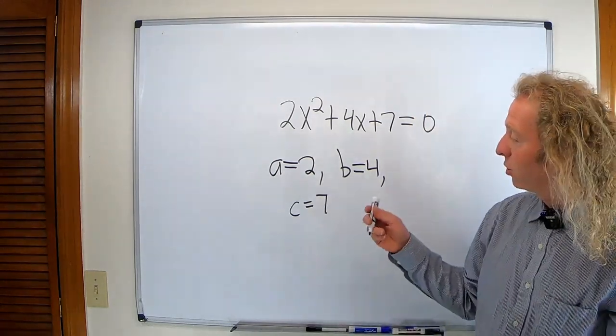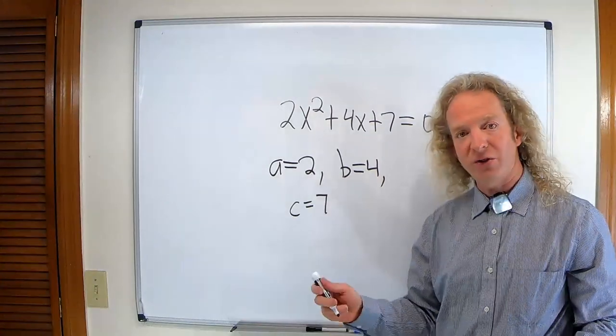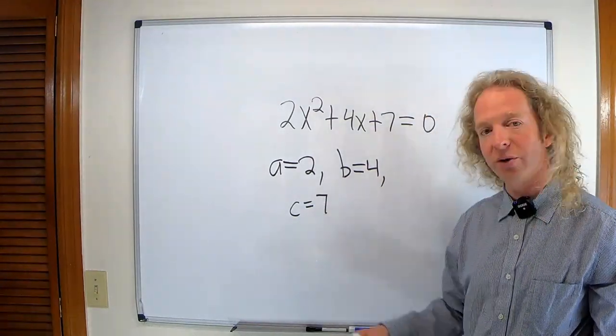Right, because A is equal to the number 2, and B is equal to the number 4, and C is equal to the number 7. So does that make sense?